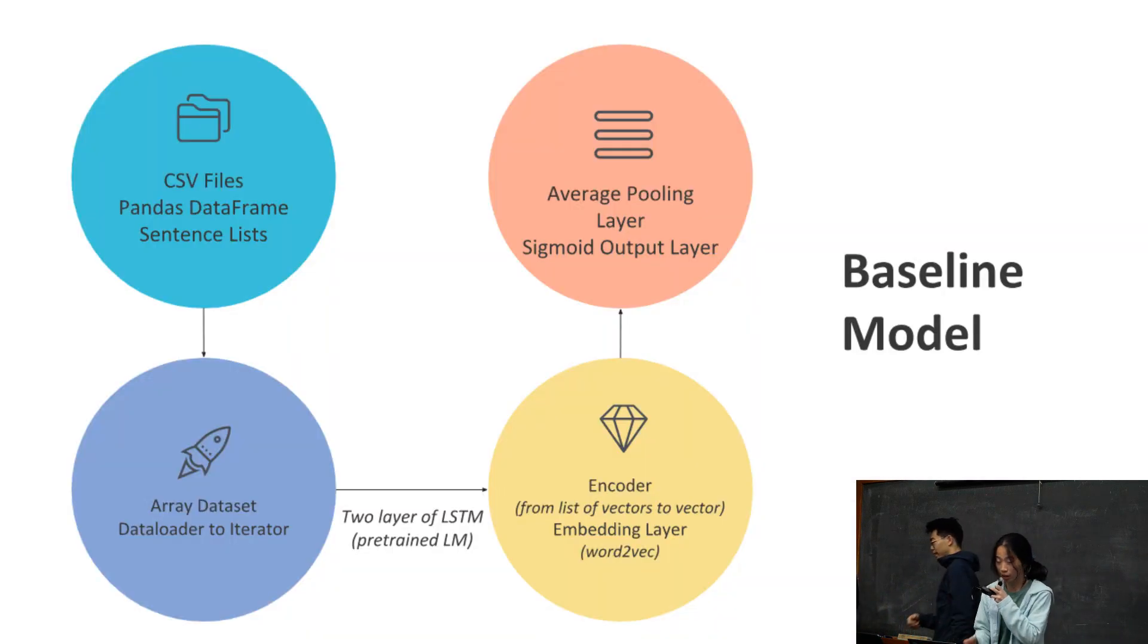We train our baseline model using data in the form of CSV files. We use the data loader to load it into an iterator so we can put it into a model. Our baseline model contains an embedding layer followed by an encoder that's a two-layer LSTM.